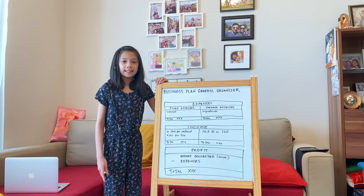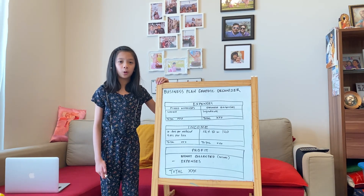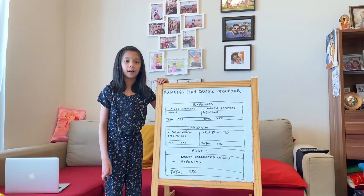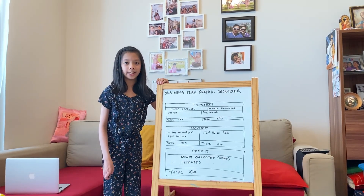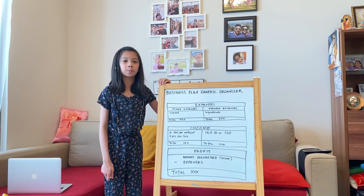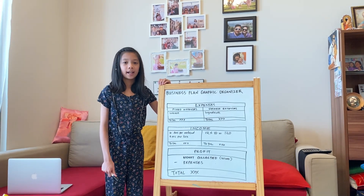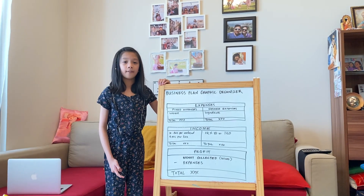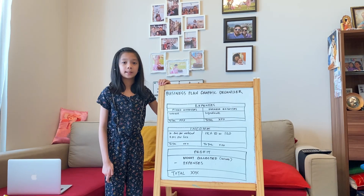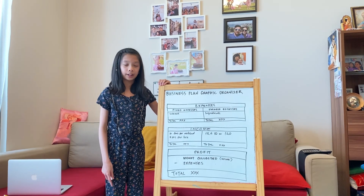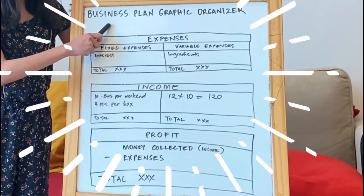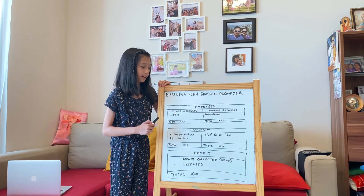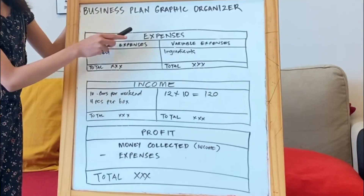I was able to make 20 boxes of oat bars and sell them for 12 dirhams each. While doing this project, it is also important to have a business plan graphic organizer like this to help track your expenses, income, and profit.